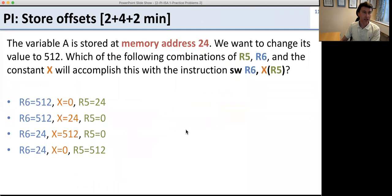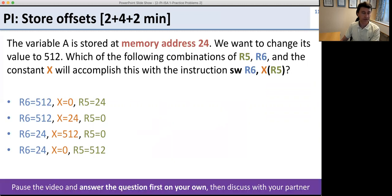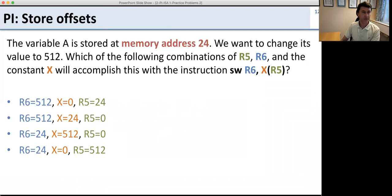Now let's go on to the next problem — another peer instruction problem about storing offsets. Figure out answers on your own first, and after you've both got your own answers, discuss them together. The problem starts: there's a variable A stored at memory address 24. We want to change its value to 512, so we need to put 512 into memory address 24. Which combinations of values for the store word instruction will do that?